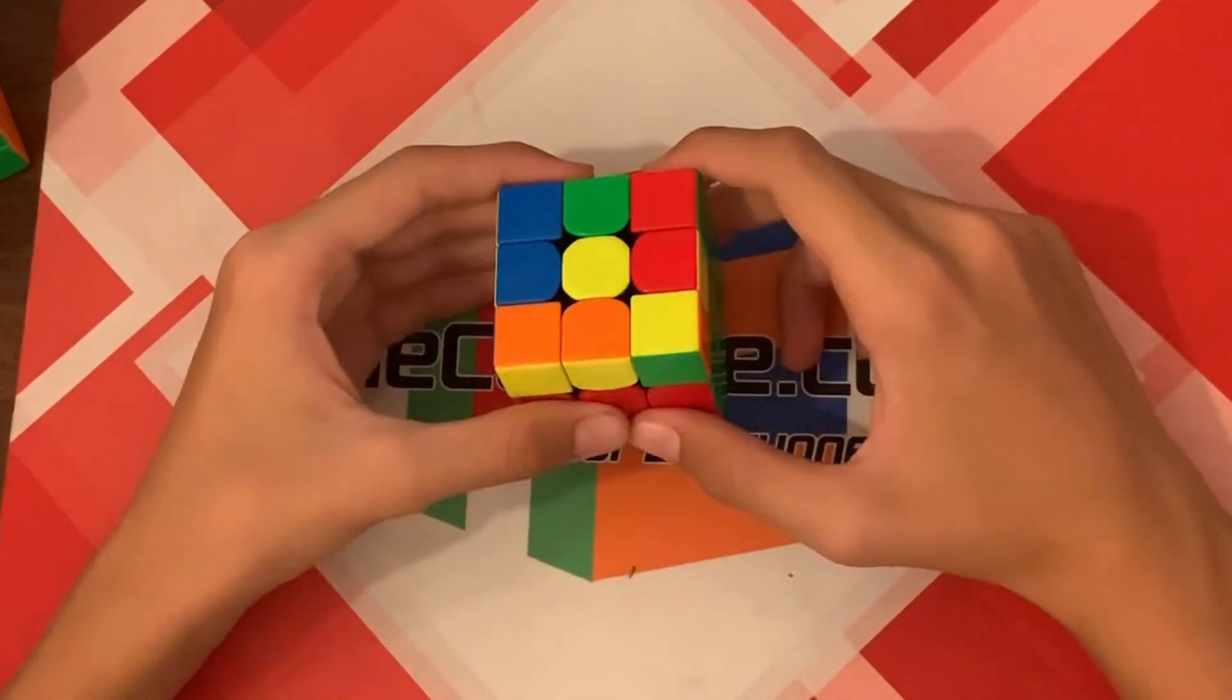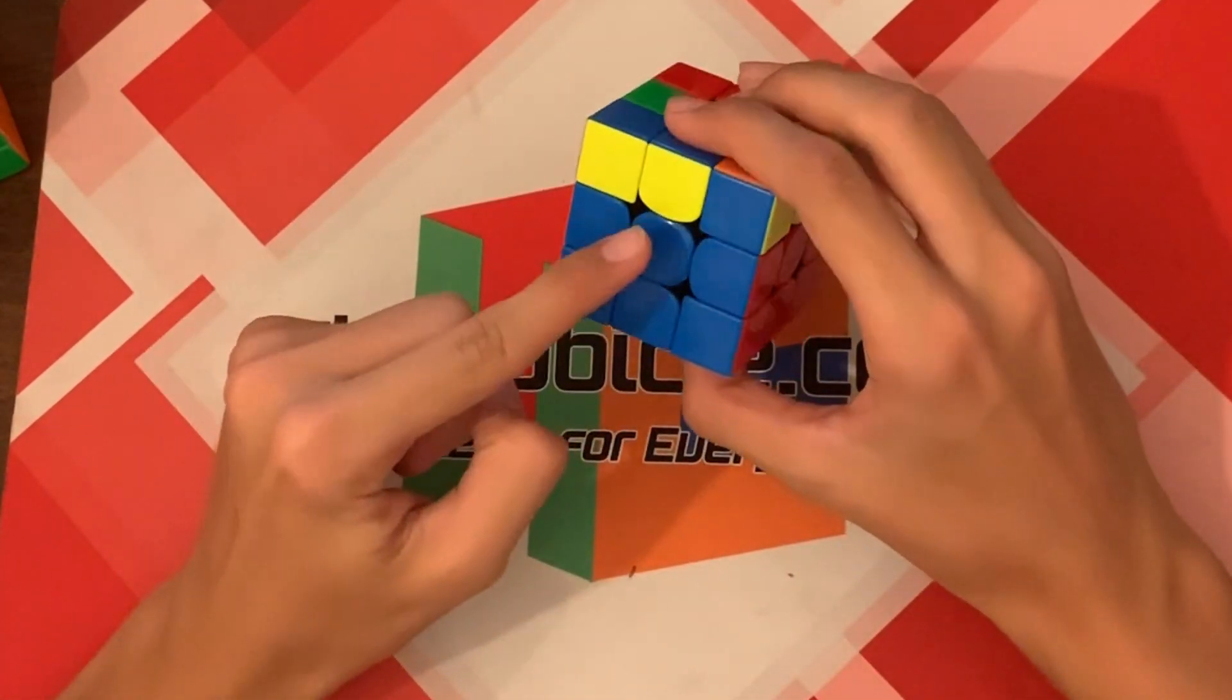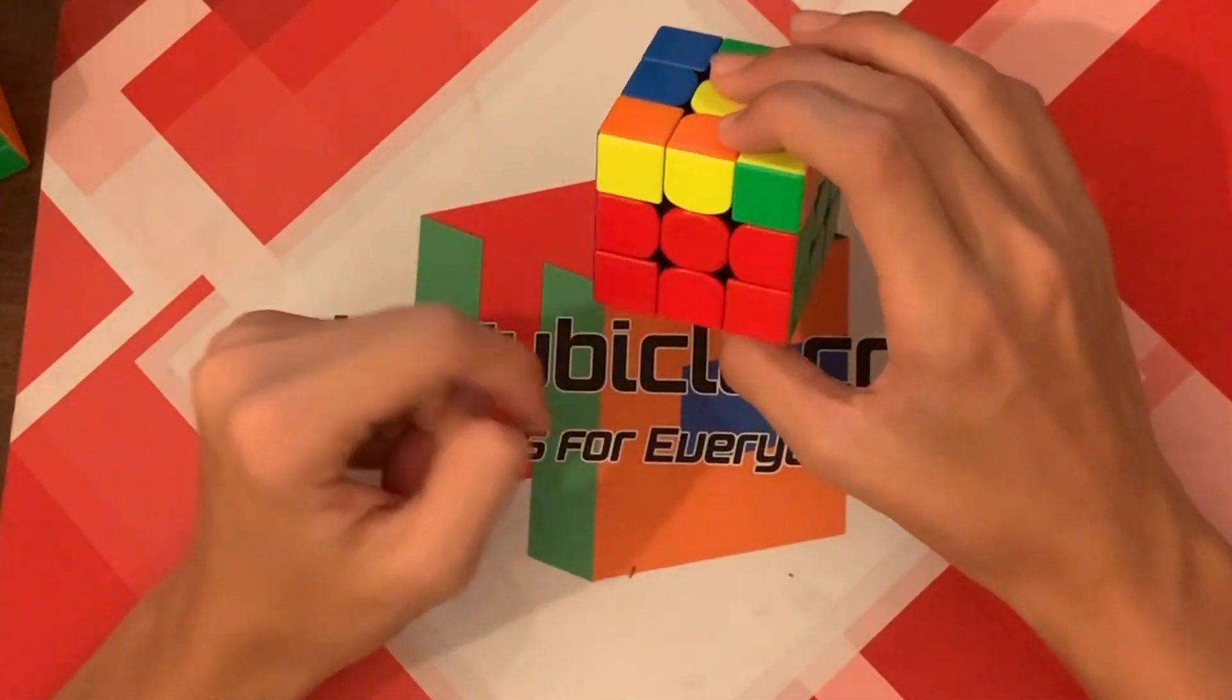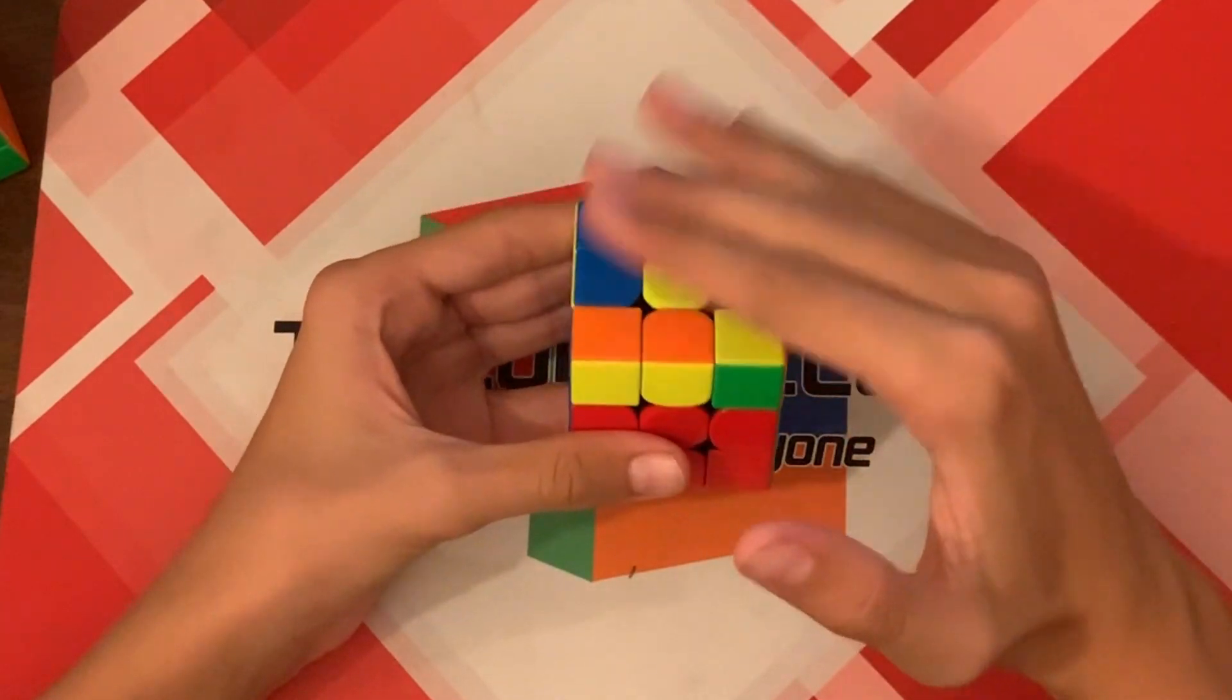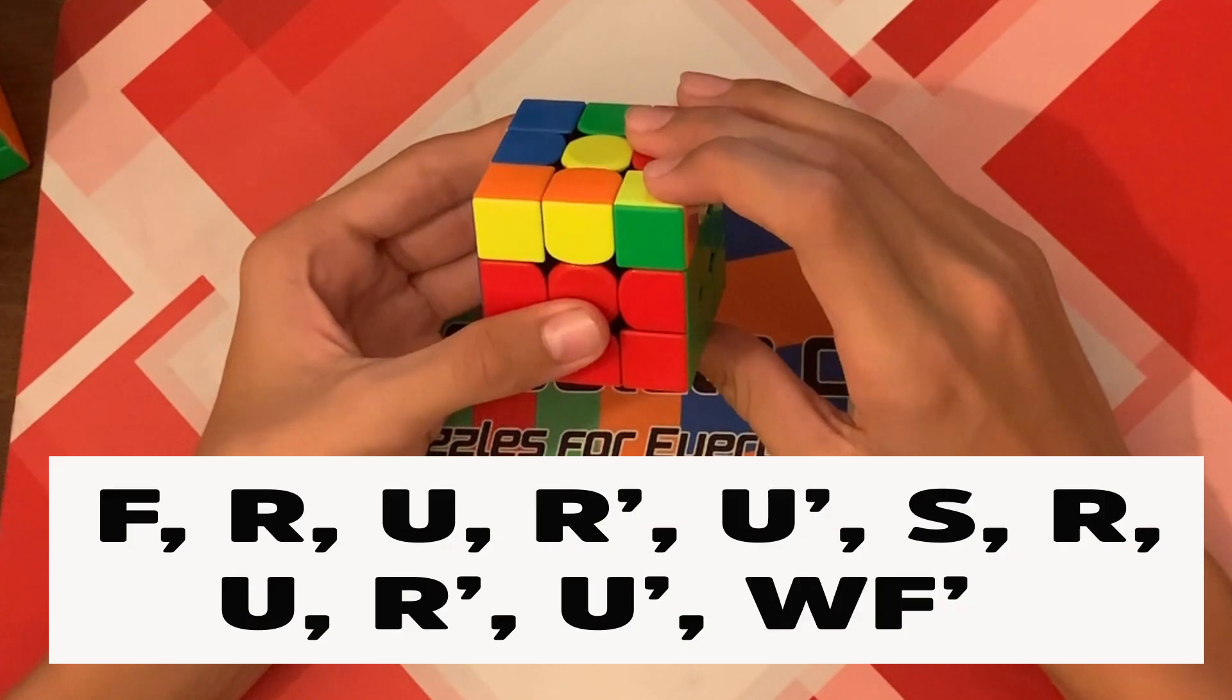So now if you have the dot, and it looks like this, you just have to make sure it's on the top. And it doesn't matter if blue, orange, green, or red are in front. Just make sure that yellow is on top. And do the algorithm.